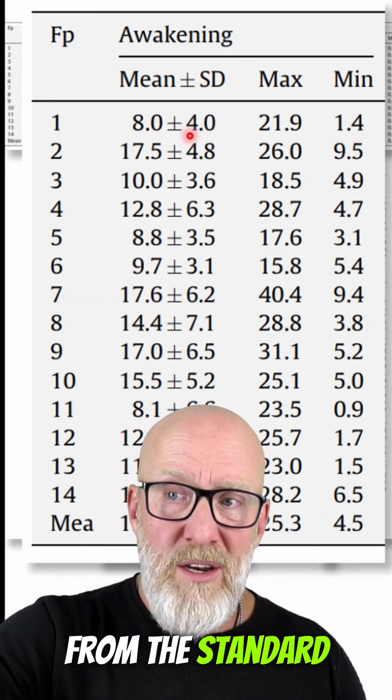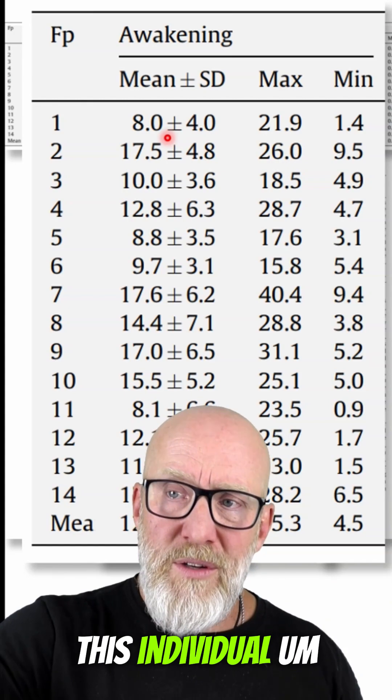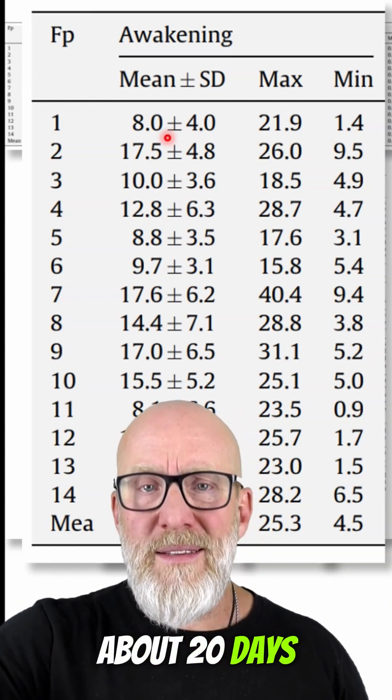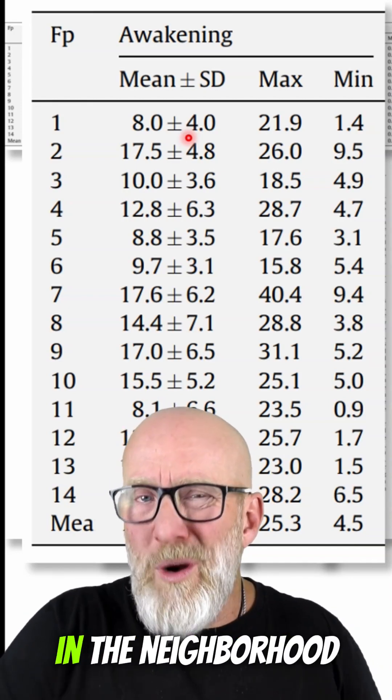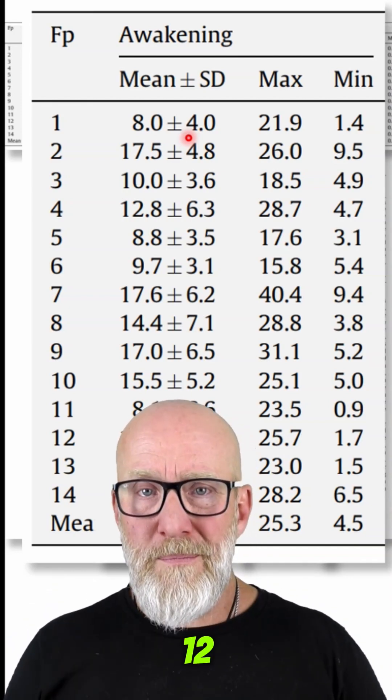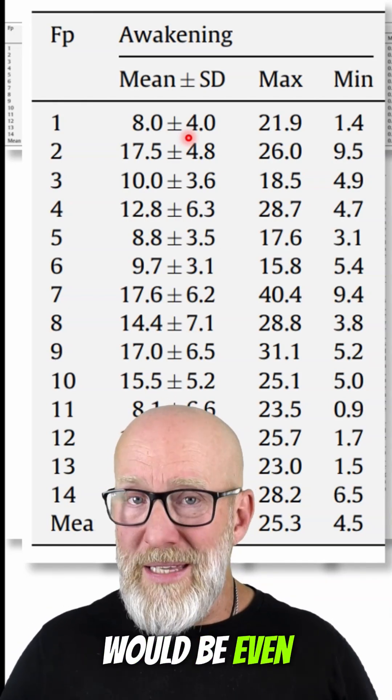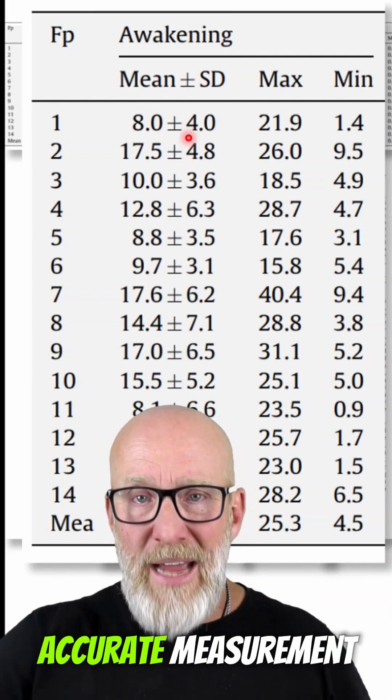Now if you look at this from the standard deviation point of view, this individual, about 20 days out of the month, using this plus or minus four standard deviations, about 20 of the days would be somewhere in the neighborhood of four to 12. The rest of the time, statistically, would be even outside of that. It's not an accurate measurement.